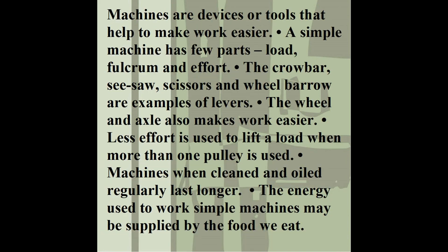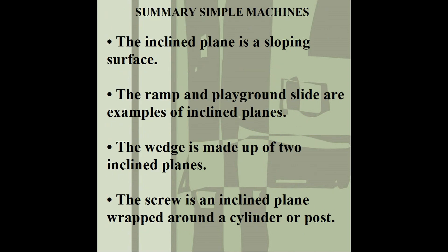Quick review: machines are devices or tools that help to make work easier. A simple machine has few parts — the load, the fulcrum, and the effort. The crowbar, scissors, and wheelbarrow are examples of levers. The wheel and axle also makes work easier. Less effort is used to lift a load when more than one pulley is used. Machines when cleaned and oiled regularly last longer. The energy used to work simple machines may be supplied by the food we eat. The inclined plane is a sloping surface — the ramp and playground slide are examples. The wedge is made up of two inclined planes, and a screw is an inclined plane wrapped around a cylinder or post.